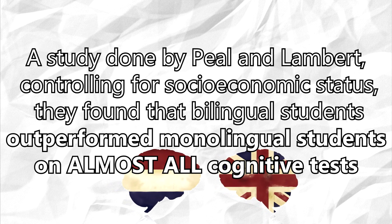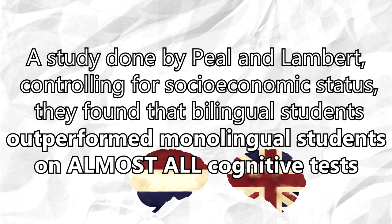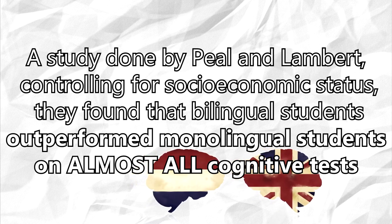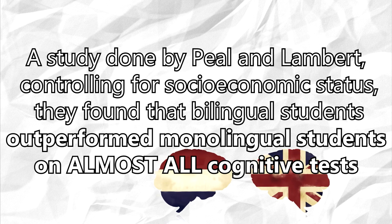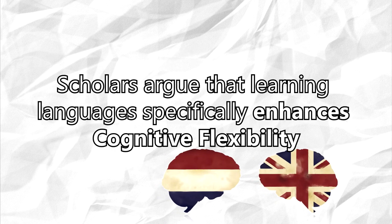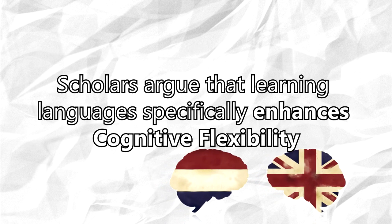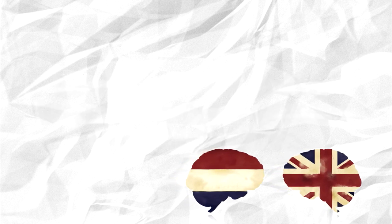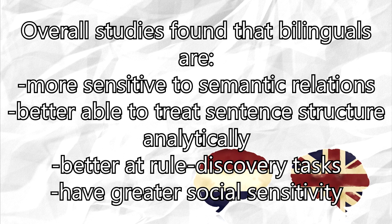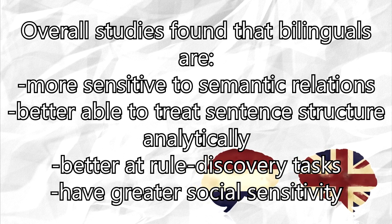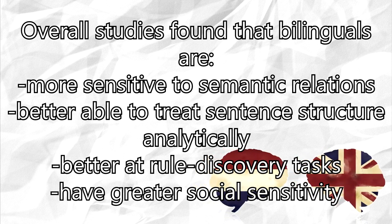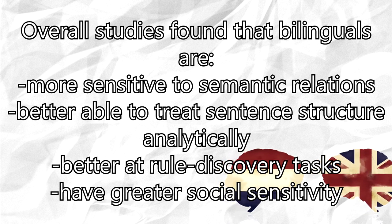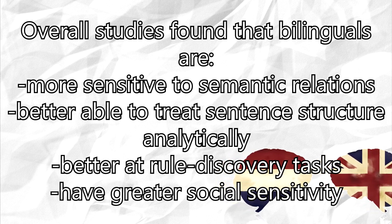A study done by Pio and Lambert, controlling for socioeconomic status, found that bilingual students outperform monolingual students on almost all cognitive tests. Scholars argue that learning languages specifically enhances cognitive selectability. Overall, studies found that bilinguals are more sensitive to semantic relations, better able to treat linguistics and instruction analytically, better at word discovery tasks, and have greater social sensitivity.